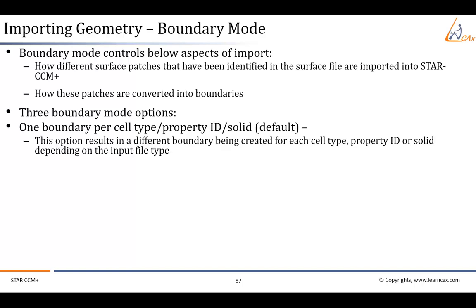Up to three different boundary mode options are present. The first is 'one boundary per cell type, property ID, or solid,' which is the default. This option results in different boundaries being created for each cell type, property ID, or solid, depending on the input file type. For the database and cell vertex input formats, the 'combine boundaries by name' option is on by default. This option allows cell tables with the same name to be automatically combined during import if desired.